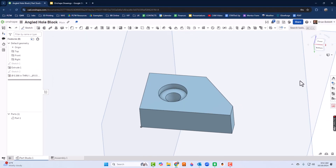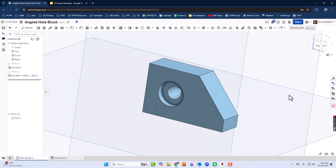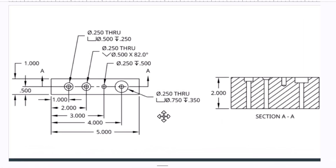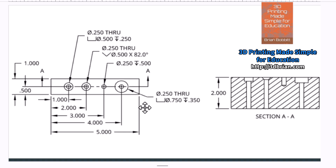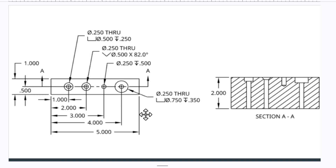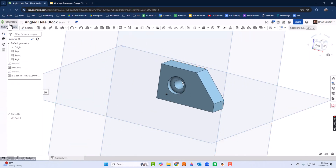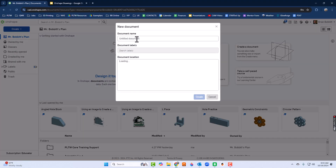That looks just right. Now let's advance and take on something a bit more complex — a hole block. It's just a block with four holes in it. The strategy is to make the block first: one inch thick, five inches long, by two inches tall. I'll create a new document and call it 'hole block.'